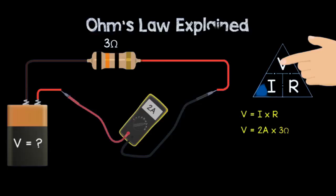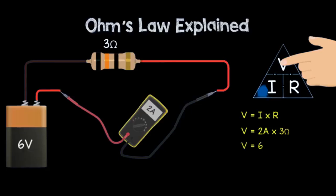We know the current is 2 amps, so we can write that down, and we also know the resistance is 3 ohms, so we can write that down. As a result, 2 amps multiplied by 3 ohms equals 6 volts. Therefore, the battery is 6 volts.